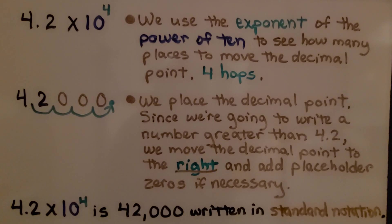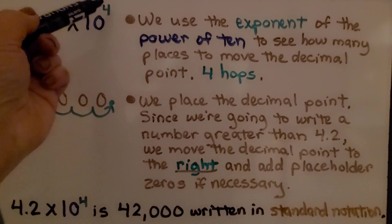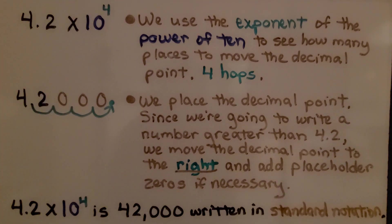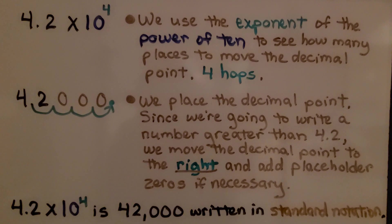We use the exponent of the power of 10 to see how many places to move the decimal point — 4 hops, because we have a 4 for our exponent. We place the decimal point. Since we're writing a number greater than 4.2, we move the decimal point to the right and add placeholder zeros if necessary. 4.2 times 10 raised to the fourth power is 42,000 in standard notation.